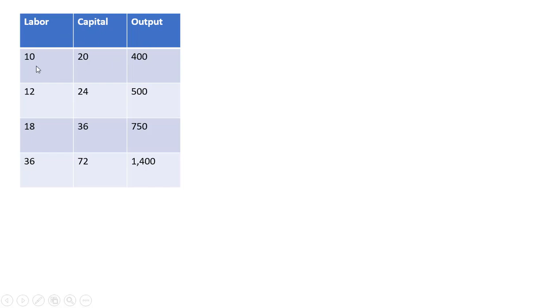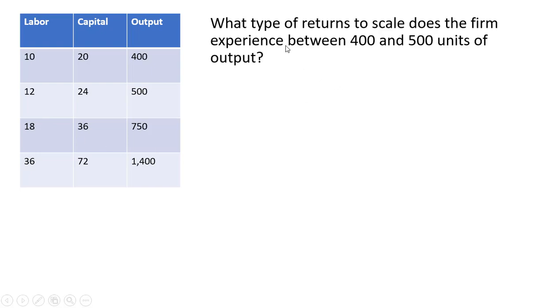In this first row, the firm uses 10 units of labor and 20 units of capital to produce 400 units of output, and then so on. We want to figure out what type of returns to scale does the firm experience between 400 and 500 units of output.